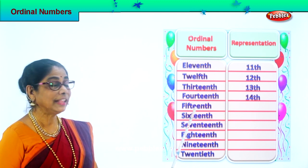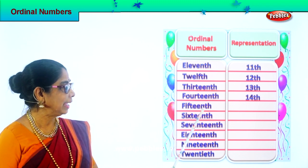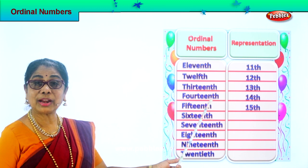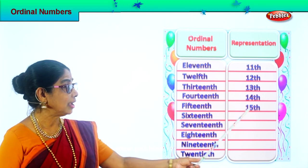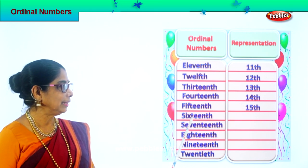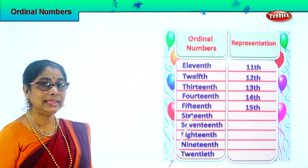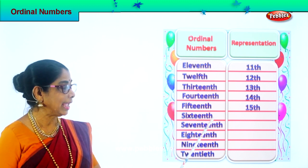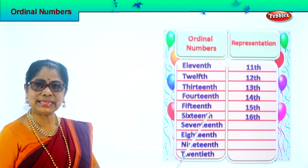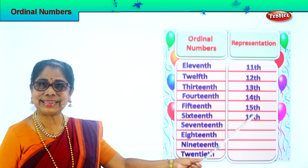Now we have here 15th. Spell fifteenth: F-I-F-T-E-E-N-T-H. 15th. How do you represent 15th? You write 15 and write TH at the side: 15th. Now look at 16th, spelled S-I-X-T-E-E-N-T-H. 16th. How do you represent 16th? Put number 16 and write TH at the side: 16th.